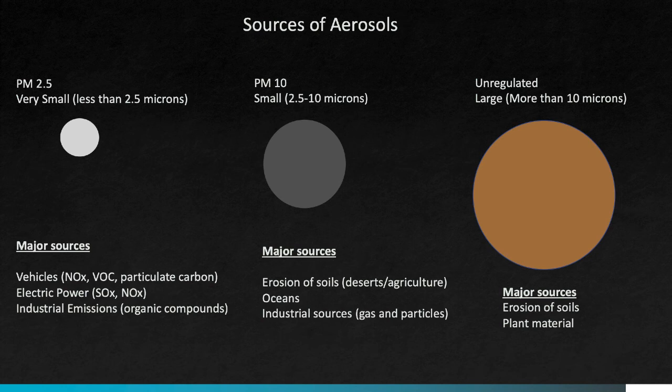For each of these particle size classes, let's talk about where they come from. For PM2.5 particles, the major sources are vehicles, which release nitrogen oxides, volatile organic carbon, and particulate forms of carbon. These small particles also have sources in the organic compounds that are released from some industrial activities.